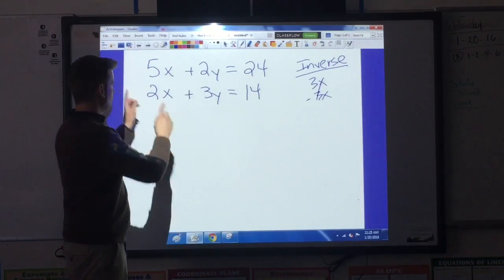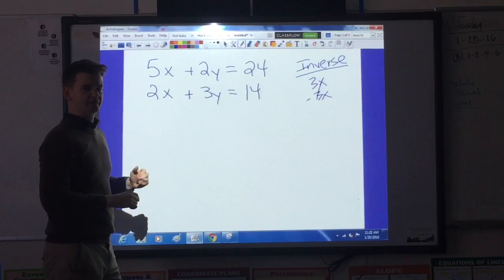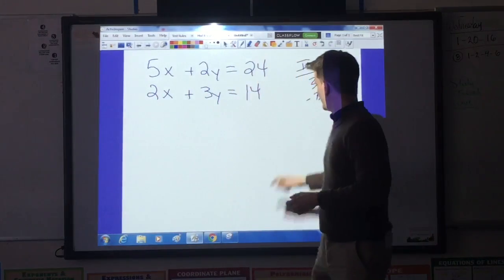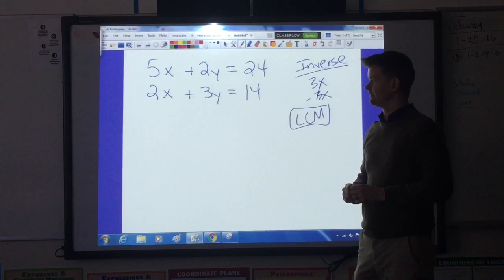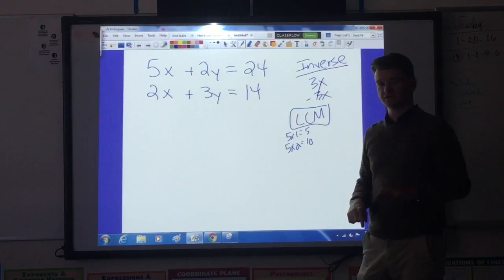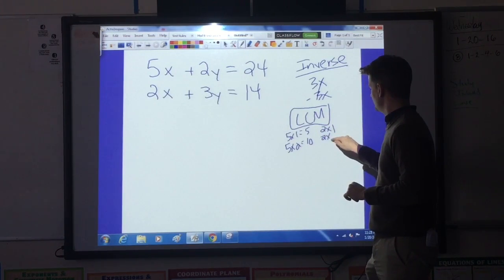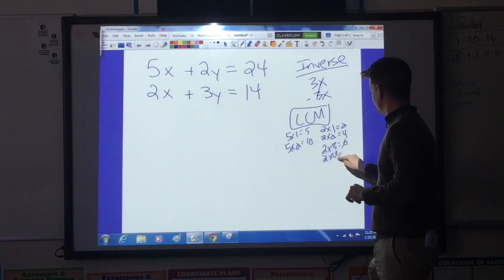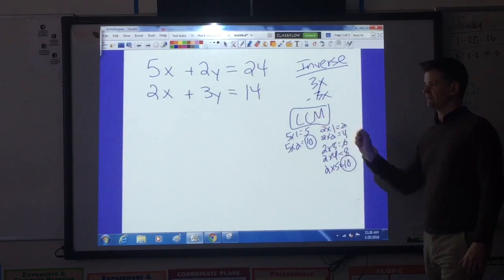For this particular problem, I'm going to work with the x's. I need to figure out what I can do to turn these equations into inverse coefficients. Specifically, I want the 5 and the 2 to turn into some numbers that would allow me to cancel them out. In order to do that, I have to find something called the least common multiple. To find the least common multiple, I take the multiples of 5 and the multiples of 2. 5 times 1 is 5, 5 times 2 is 10. I'll stop there. 2 times 1 is 2, 2 times 2 is 4. I haven't found any common multiples yet, so I keep going. 2 times 3 is 6, 2 times 4 is 8, 2 times 5 is 10. So the least common multiple of 5 and 2 is 10.